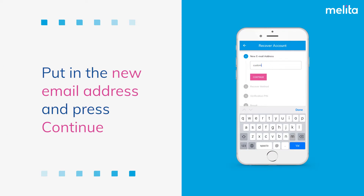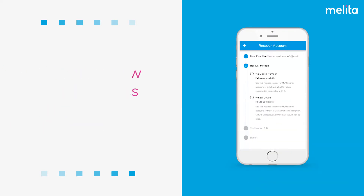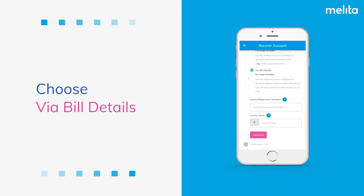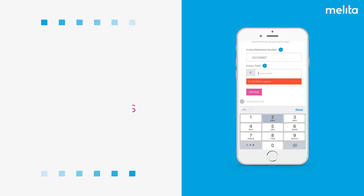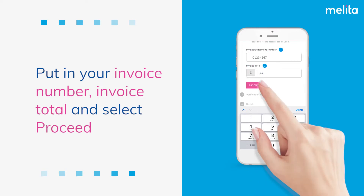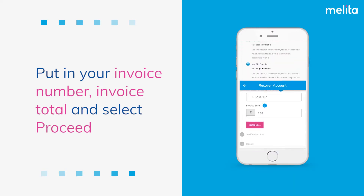Put in the new email address and press Continue. Choose Via Bill Details. Put in your invoice number, invoice total and select Proceed.